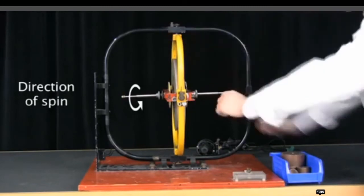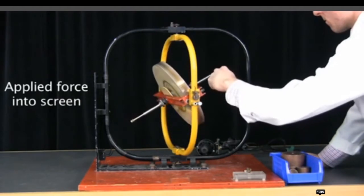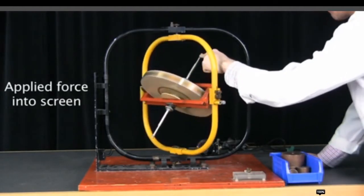And when the person applies force into the screen, in the direction into the screen, the spin axis moves this way. So now to understand that in which direction the spin axis will move, we need to understand the right hand thumb rule. If we understand this rule, you will be able to know that in which direction the spin axis will move.